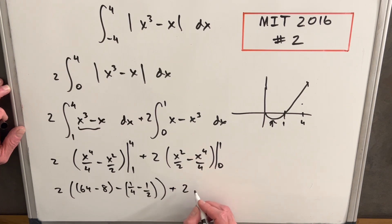And for the second part, our second integral is going to be two. Plug in a one, it's going to be one half minus one fourth. We plug zero in here, we just get a zero. So I'm going to drop that.